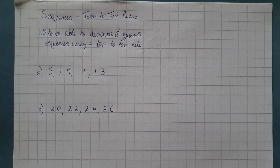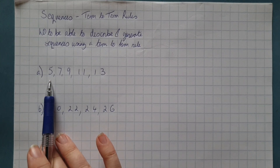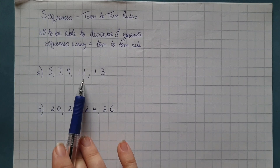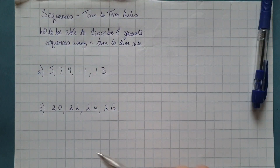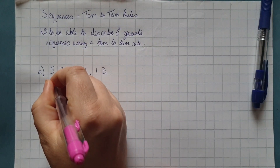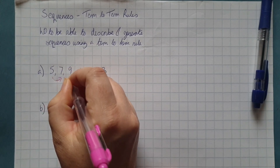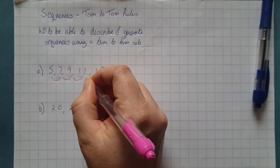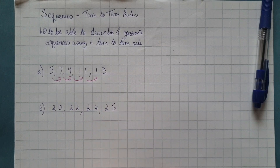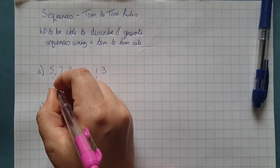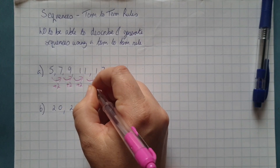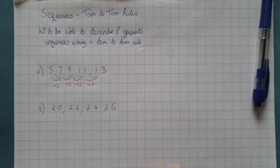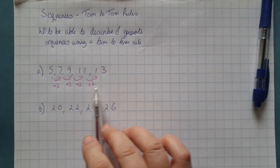We've got a sequence here to start off with: 5, 7, 9, 11, and 13. When we look at this sequence, it is clear that the sequence is going up. As we move from one term to the next term, we are adding 2.